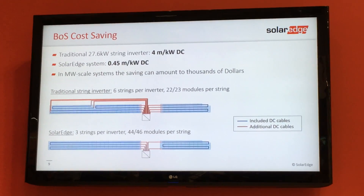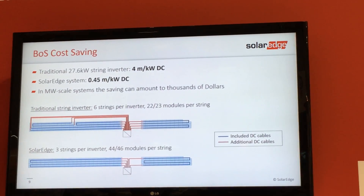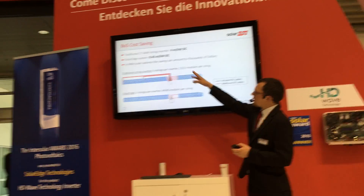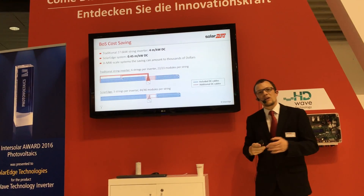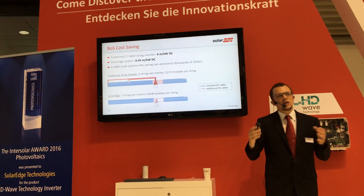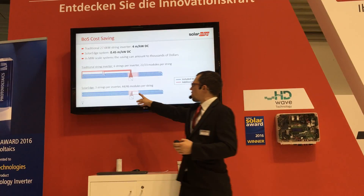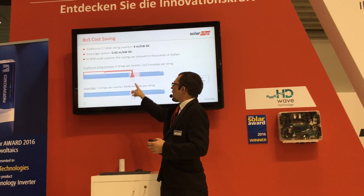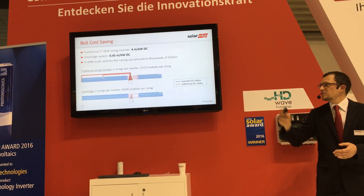The optimizers are DC to DC converters, so they can decrease the output voltage and increase the current. That way, we're able to put up to 11.25 kilowatts in one string. For this same 27.6 kilowatt inverter example, with the SolarEdge system we only need three strings to connect all the modules — up to 44 or 46 modules in one string. That gives you quite a good amount of savings on the cabling. With SolarEdge, we only need this additional cabling, whereas with the traditional inverter you need to run all these red wires to connect the different strings to the inverter.